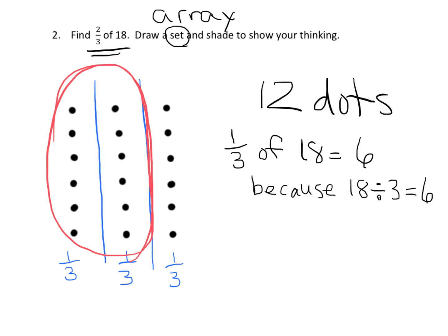And what does that mean? We took the 18 dots over here and we divided them by 3 to put them into 3 equal groups. Because 18 divided by 3 is 6, that means each third is equal to 6. And so now 2 thirds means we're going to have 2 groups, so it's going to be 2 times 6, which is 12 dots.